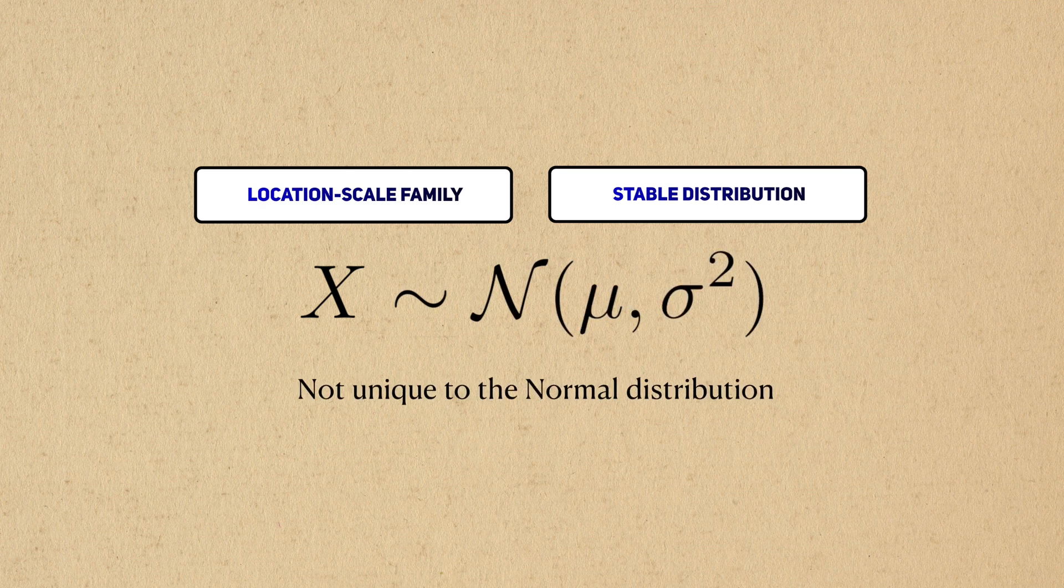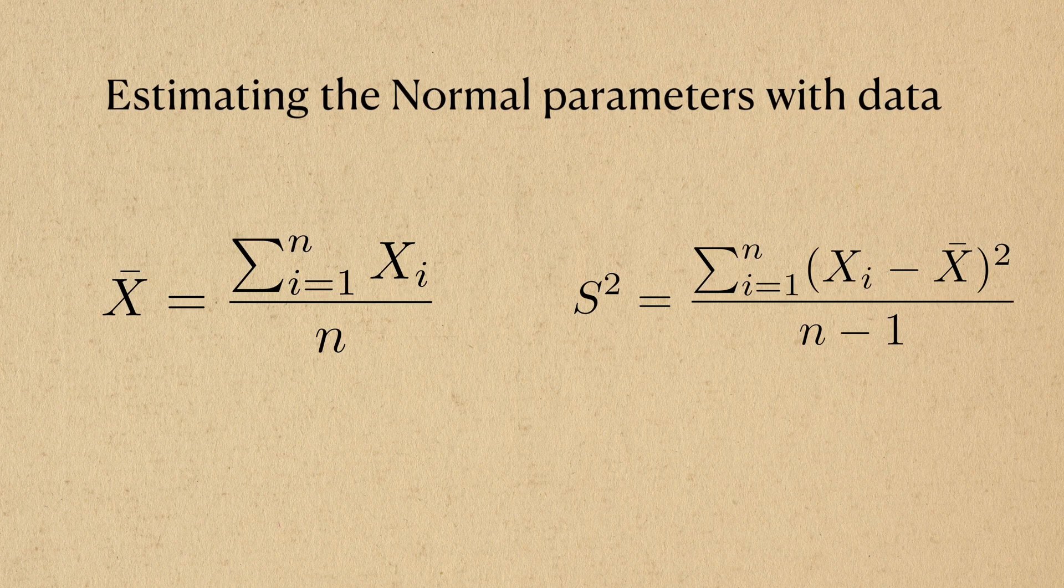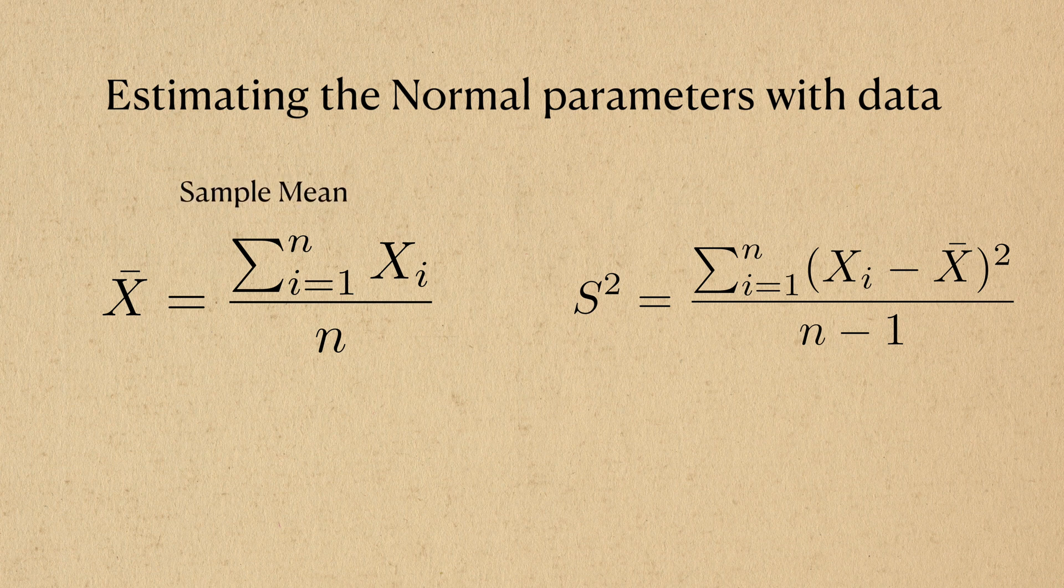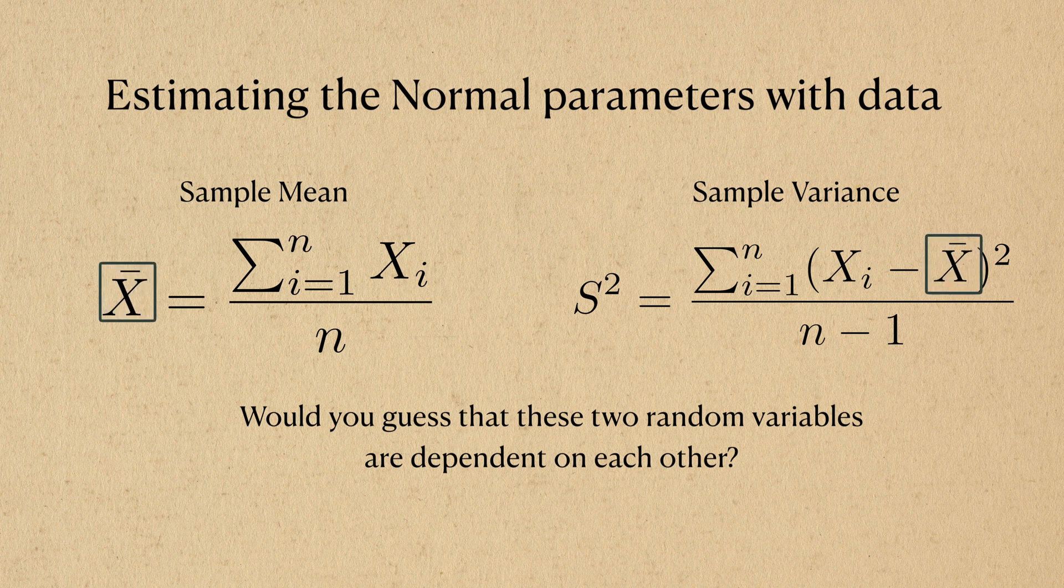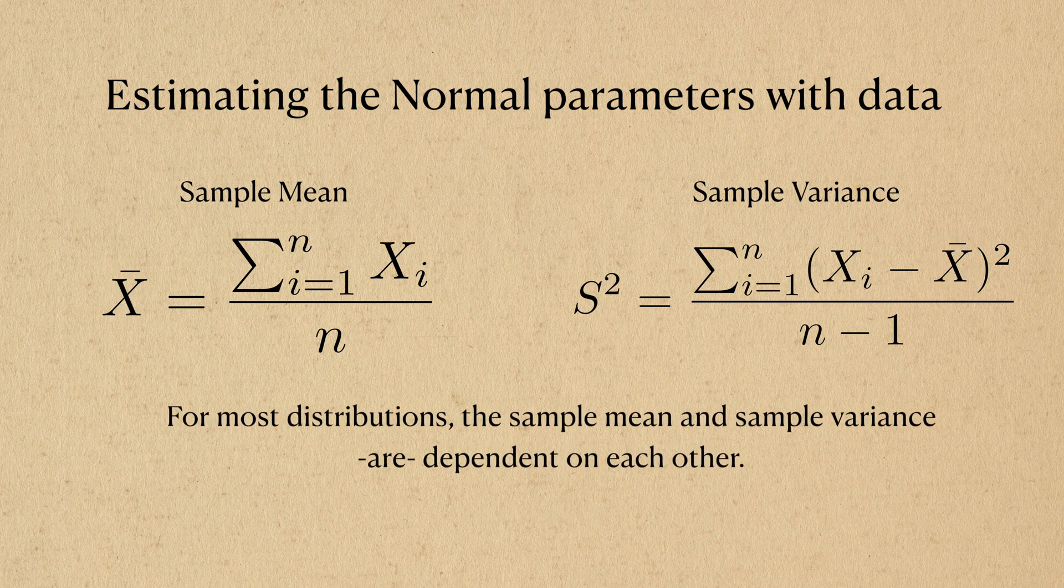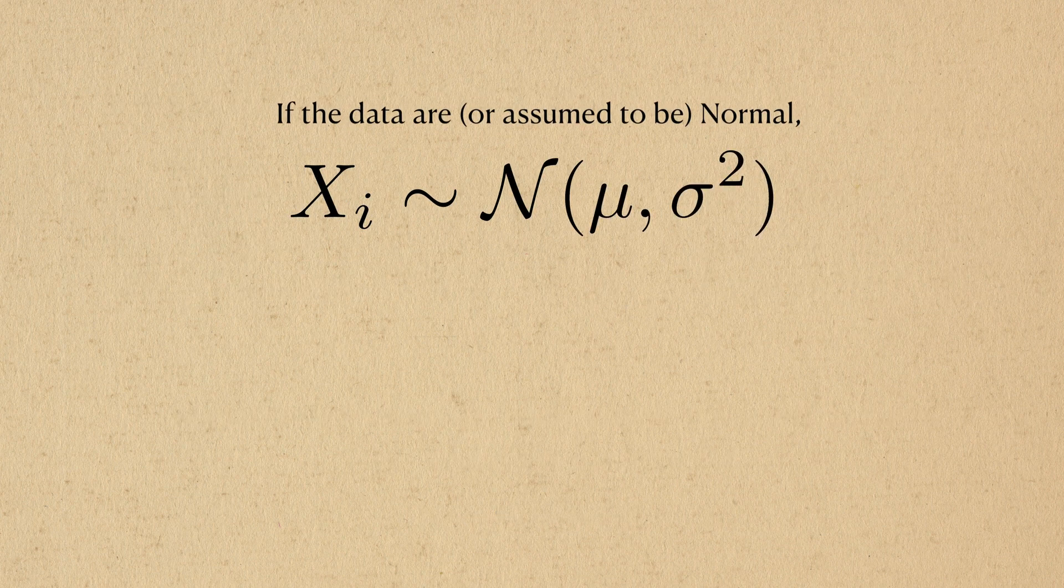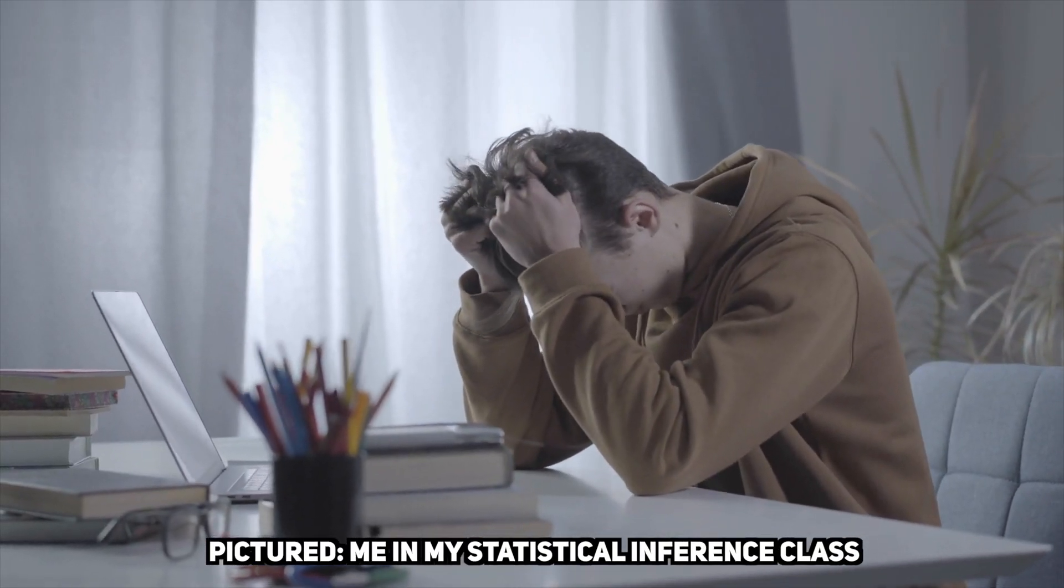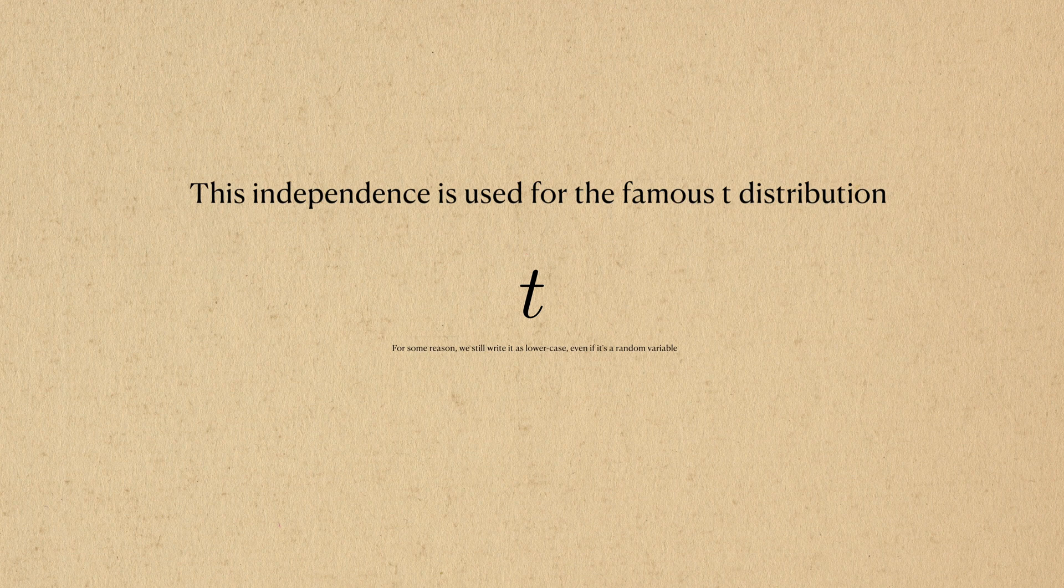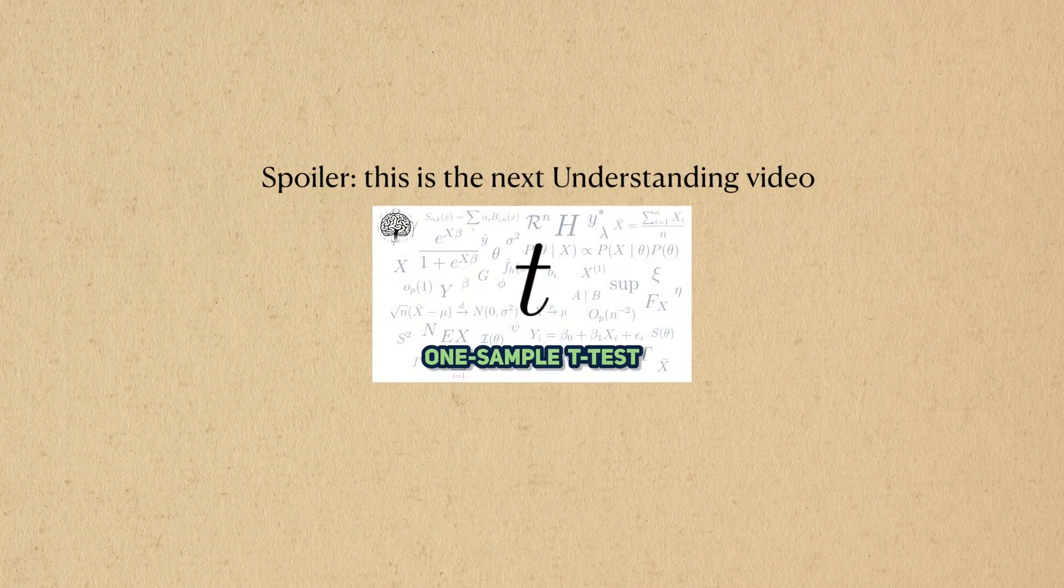The location scale and stability properties are not unique to the normal distribution, but this third property is. To appreciate it, we need to put up some equations. After we collect data, we can create estimators for both the mean and variance. Just by looking at the equations, would you say that the sample mean and sample variance are dependent on each other? I mean, the sample mean is right here in the variance equation, so intuitively they should depend on each other, right? While this is true for most other distributions, it's actually not for the normal. If the data comes from a normal distribution, then these two estimators are independent. Proving this is a character building exercise for statistics students, and we won't discuss it in this video. This independence is significant because it's necessary for constructing the famous t-distribution, which will take center stage when we talk about t-tests.